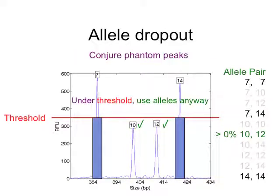There are methods to deal with allele dropout. Since you drew the threshold and threw out some of your data, now you want the data back, so you kind of conjure these phantom peaks — you imagine they might be there and bring them back in with some probability. That does work better than just throwing them out completely. You bring things back, and now the probabilities are greater than zero.